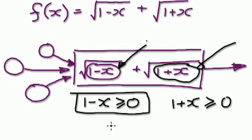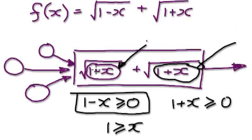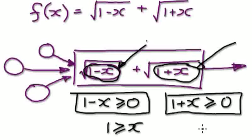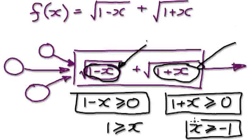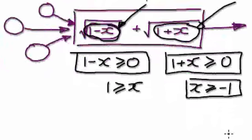For this one here, let's add x to both sides. So you need x to be less than or equal to 1. And then looking at this here, let's take away 1 from both sides. So for this side, you need x to be greater than or equal to negative 1.